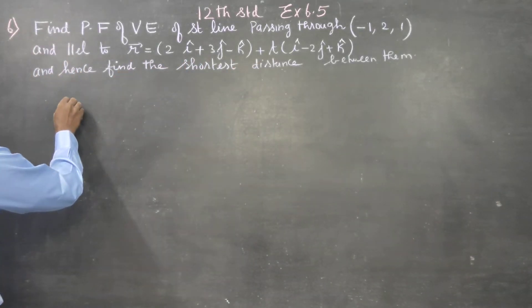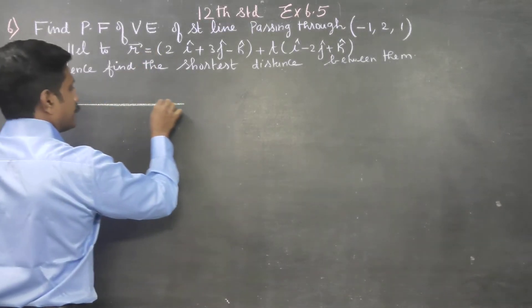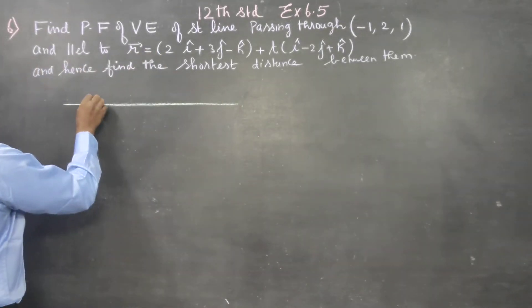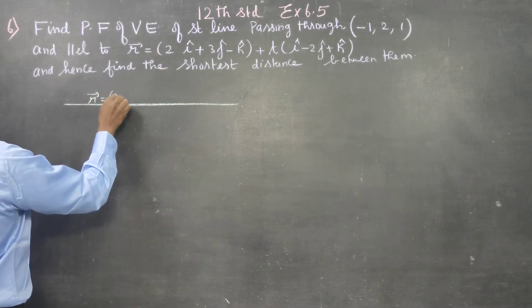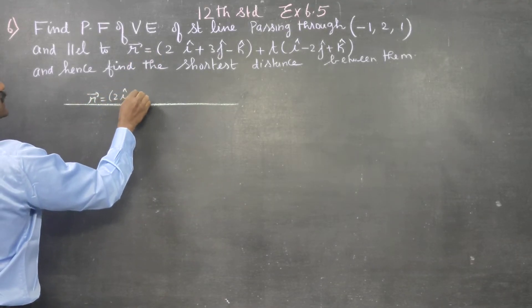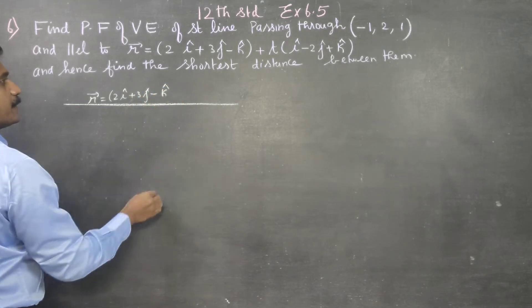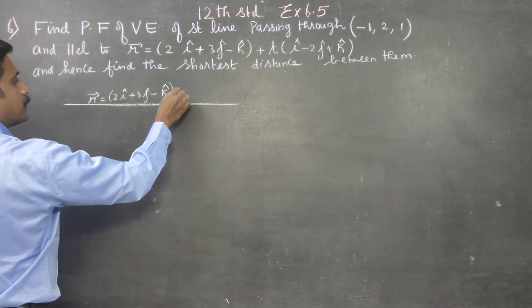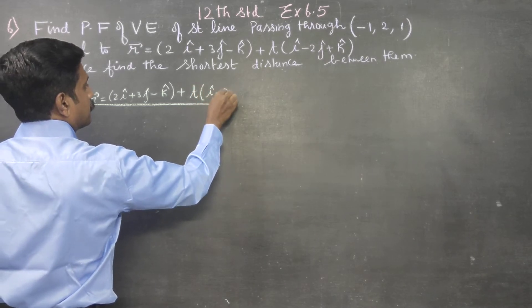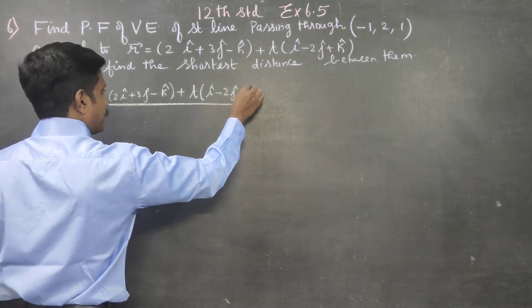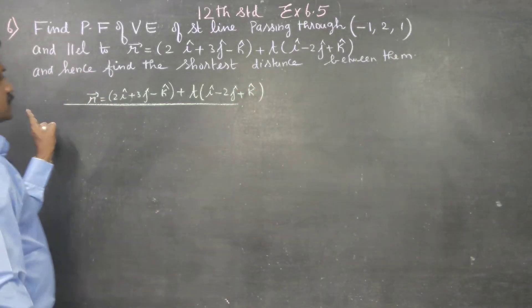This is a straight line. R vector is equal to 2i plus 3j minus k plus t into i minus 2j plus k. This is a straight line.